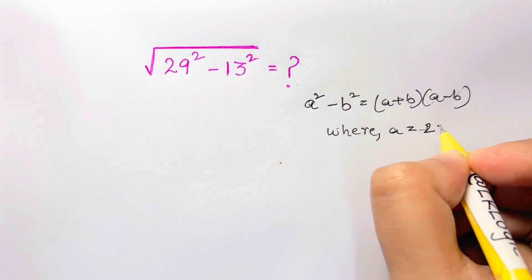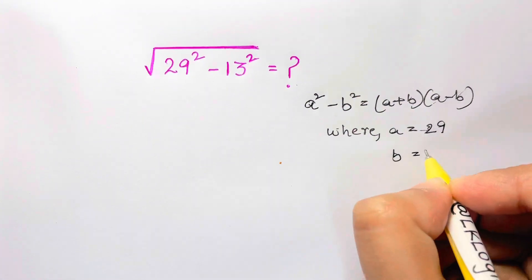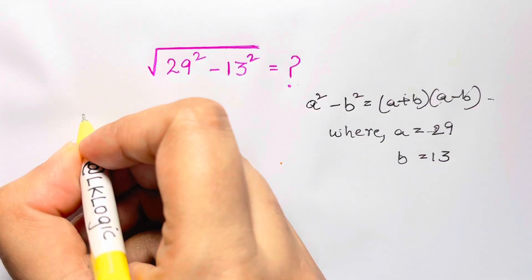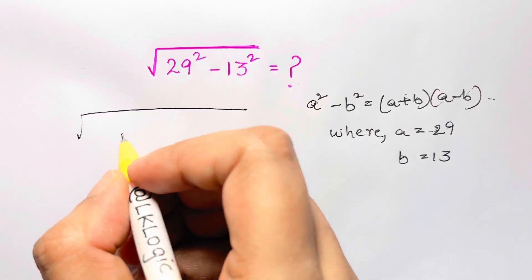So let's put the values in this. We have under root of 29 plus 13 times 29 minus 13.